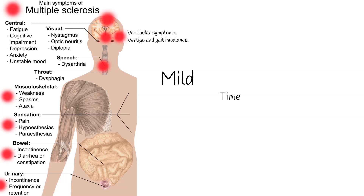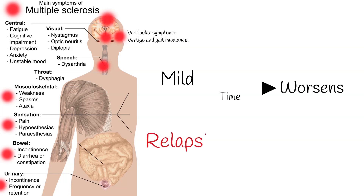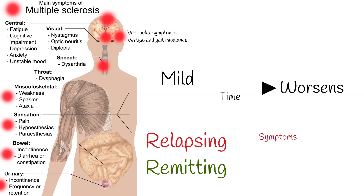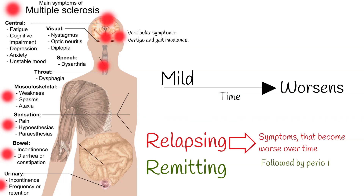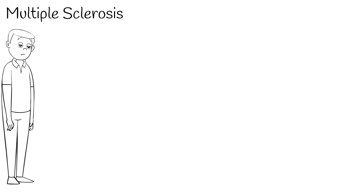The condition is often mild early on and worsens as time progresses. Multiple sclerosis most commonly presents as relapsing-remitting, meaning disease symptoms become worse over time — this is called relapsing — followed by periods of less severe symptoms that do not completely cease, called remitting. Generally, multiple sclerosis is detected between the ages of 20 and 40.